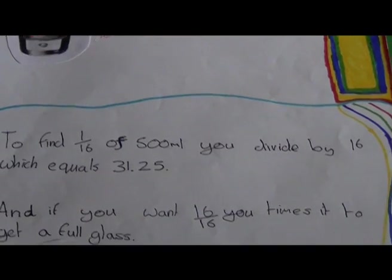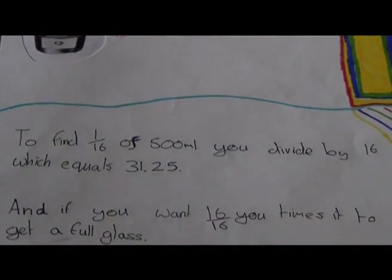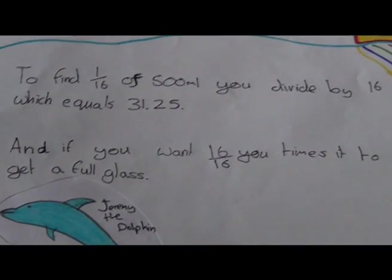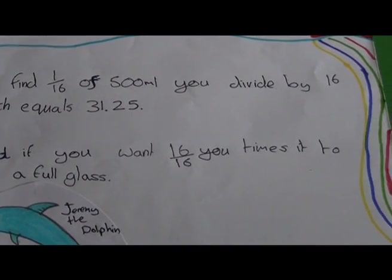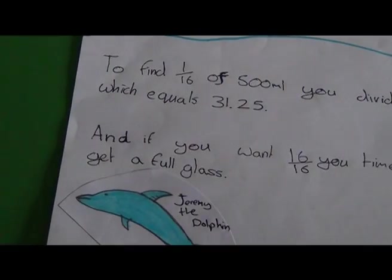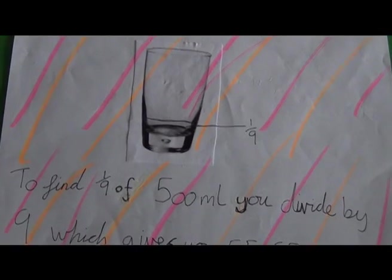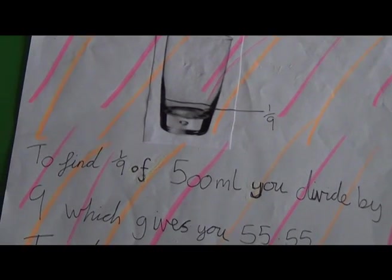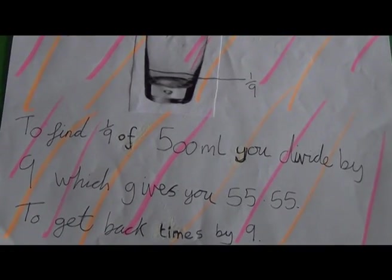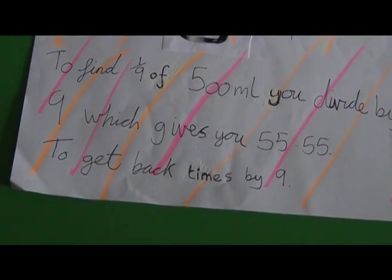Nice banana. To find one-sixth of 500ml, you divide by 16, which equals 31.25. And if you want 16 sixteenths, you times it to get a full glass. To find one-sixth of 500ml, you divide by nine, which gives you 55.55. To get back, times by nine.